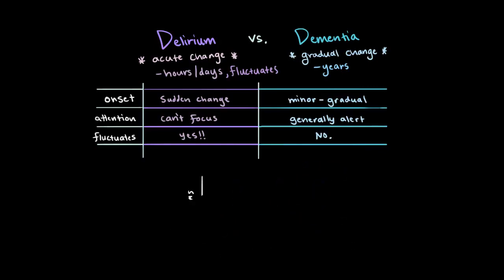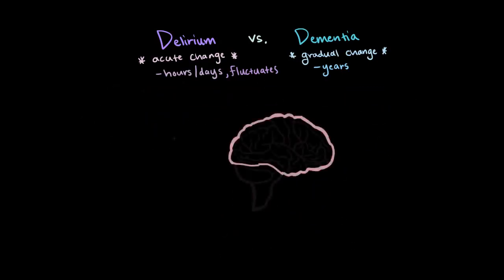Cases of delirium are usually caused by this disruption in the normal sending and receiving of brain signals, which more often than not is from a lack of oxygen or some other substance that the brain is used to receiving. And because of this, and unlike dementia, delirium is typically temporary and reversible, which is a major distinction. It's not necessarily permanent like dementia is.